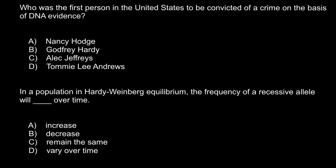The question is: who was the first person in the United States to be convicted of a crime on the basis of DNA evidence? There are four answers to choose from. I have a hint for you — this is not answer A, because Nancy Hodge is a female name. She was actually the victim in that trial, so we can cross out her name.